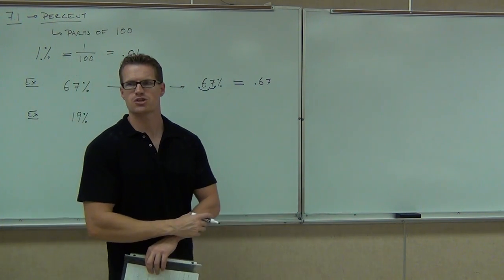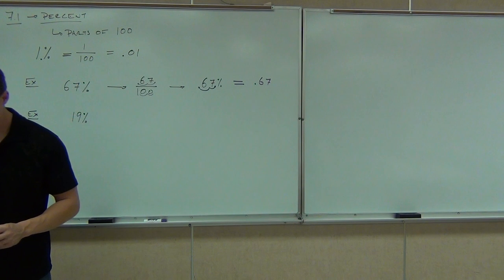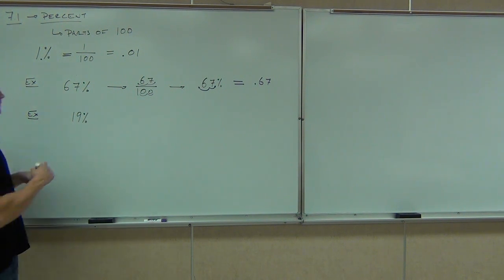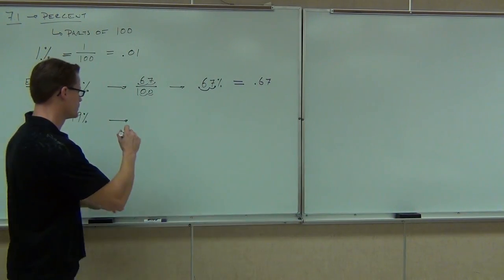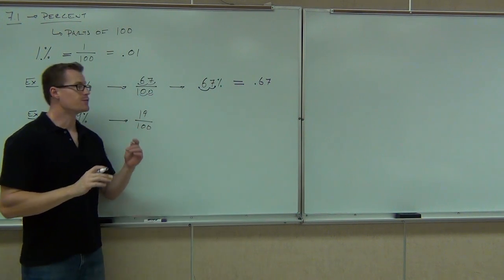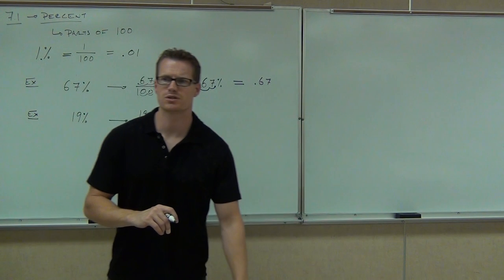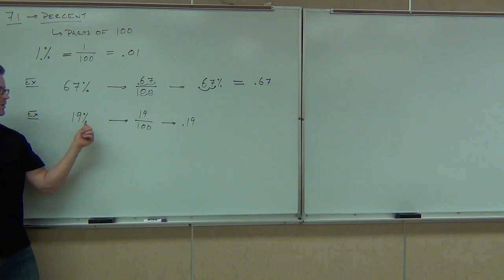Write 19% as a fraction, and write 19% as a decimal. As a fraction, we should get something over 100 because percent means parts of 100 — so 19 over 100. Normally if you were able to reduce these you would, but these aren't reducible, so we leave them as they are. As a decimal, you're going to get 0.19. We change from a percent to a decimal by moving the decimal place two spots left.